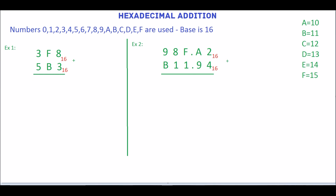Start with the rightmost digits, which are 8 and 3. If you add 8 and 3, the result is 11, which is equivalent to B. Next, add F and B.